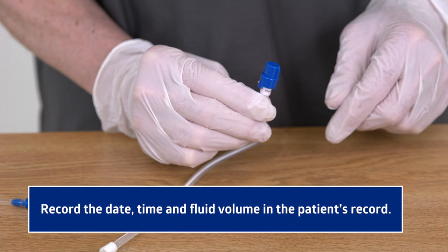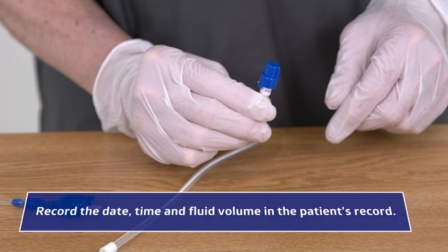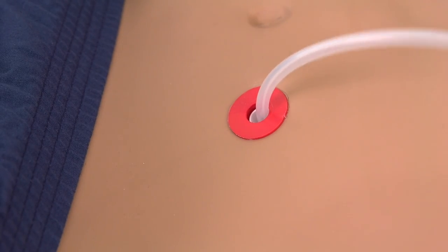Finally, record the date, time, and fluid volume in the patient's record. You're now ready to replace the dressing over the catheter.